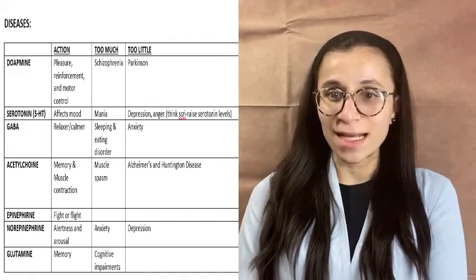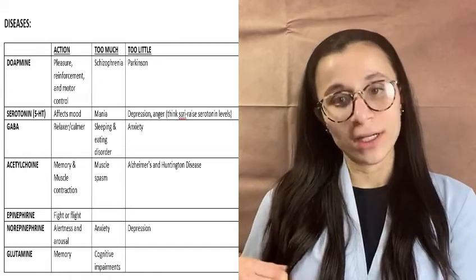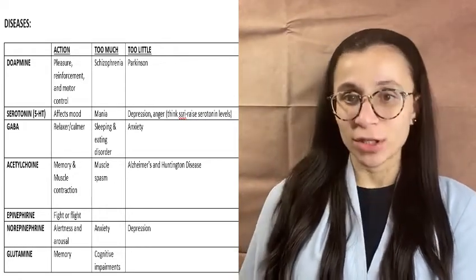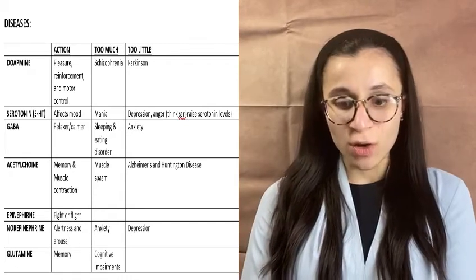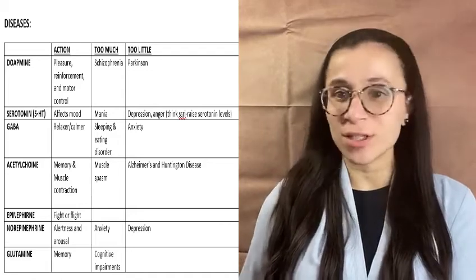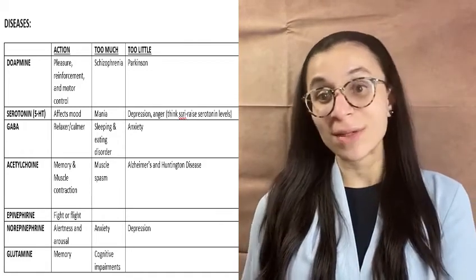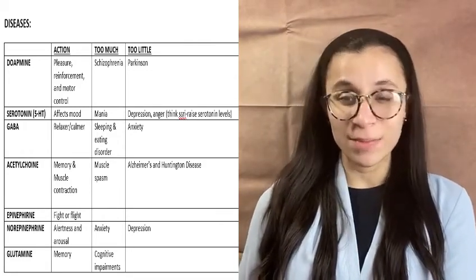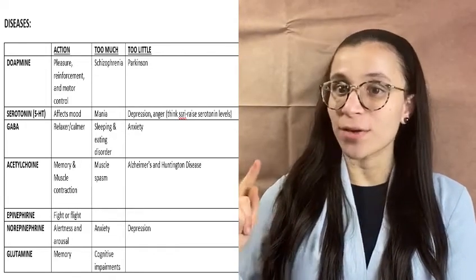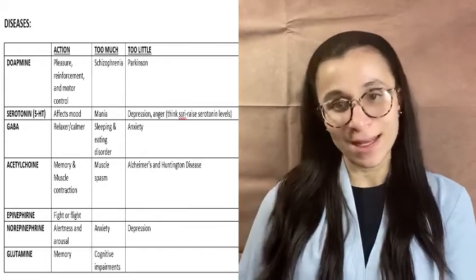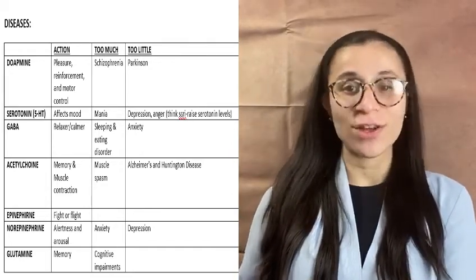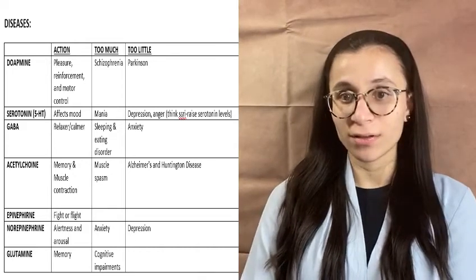The next one is acetylcholine. How I like to remember it is M&M — memory and muscle contraction. If someone has too much muscle contraction, they're going to have muscle spasms and seizures. If someone has too little, it's going to cause paralysis or Huntington's disease. And since it's also about memory, you're also going to have Alzheimer's if you have too little acetylcholine.